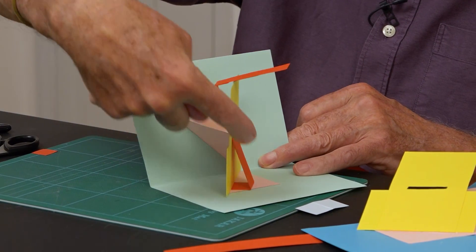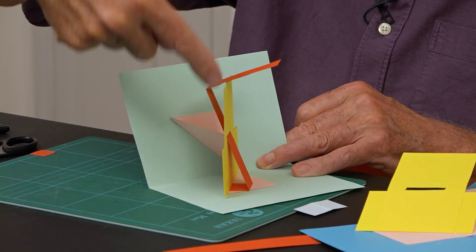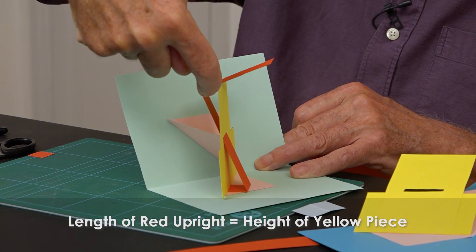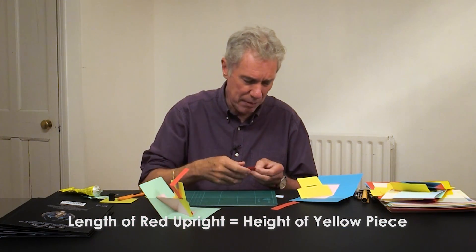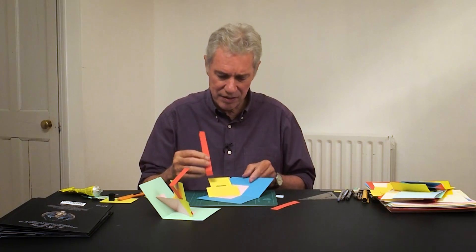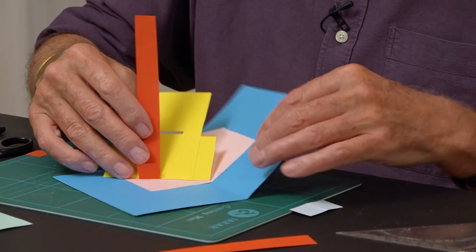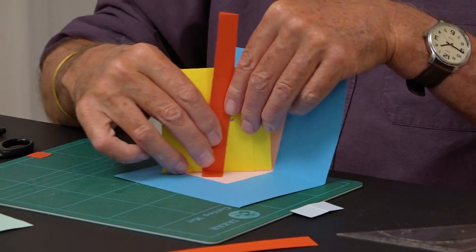This piece, the piece that comes up, that needs to be the same height as the total yellow. So now, having made the tab on one end, I just need to measure how high the whole thing needs to come this time.